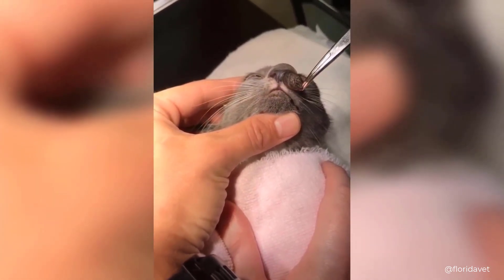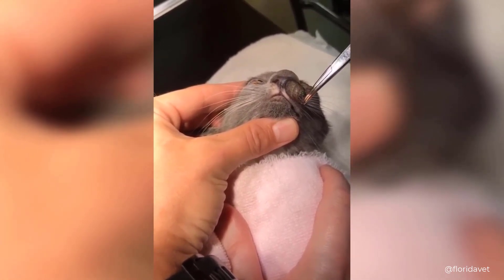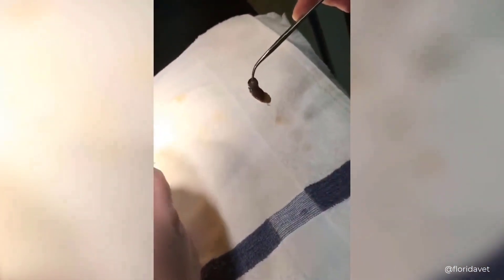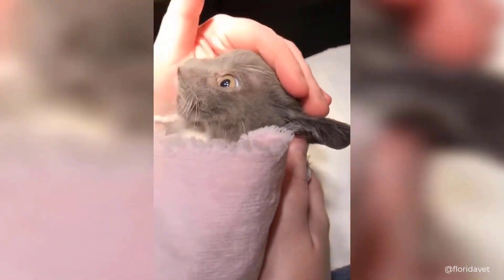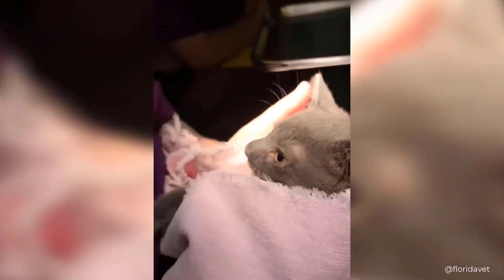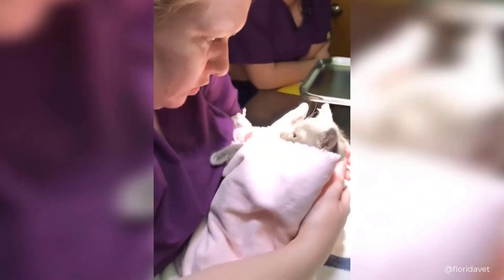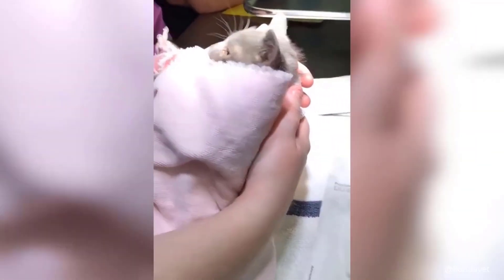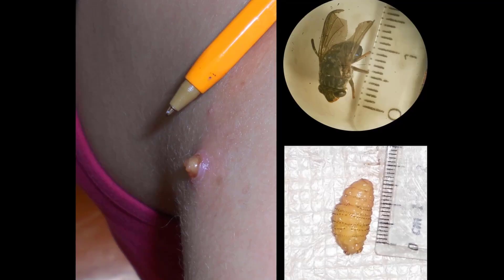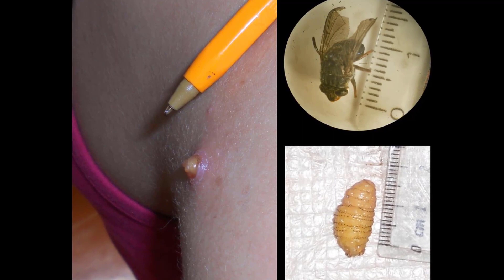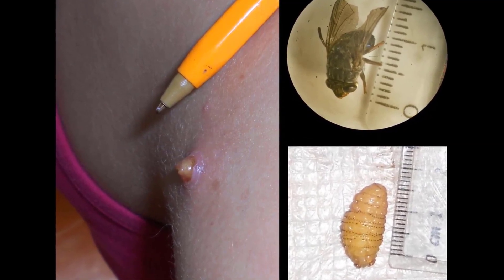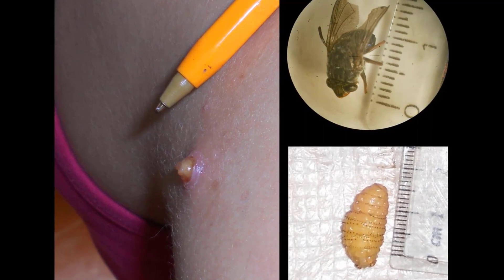Once the immature botfly larvae lands on the unsuspecting host, the larvae will burrow beneath the host's skin through the wound from the mosquito bite, or through hair follicles or other crevices in the body. It uses its hooked mouthparts to create a breathing hole, so it can stay alive inside its host. The larvae will stay under the flesh of the host for up to three months, all the while eating and growing, and causing increased inflammation around its excavation spot. At this stage, the larvae feeds on the host body's reaction to it, known as exudate.